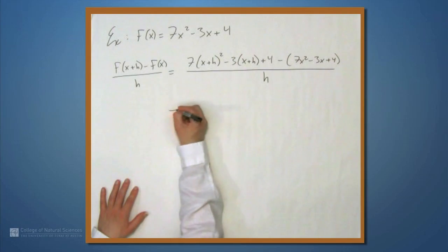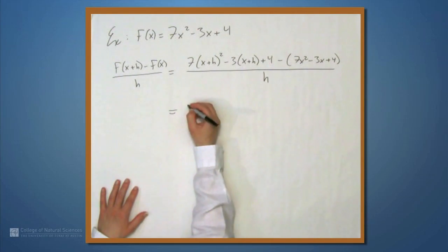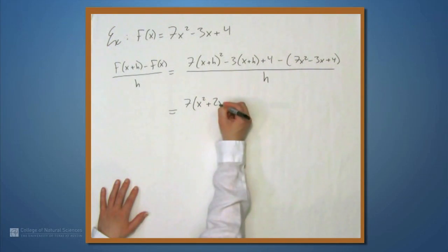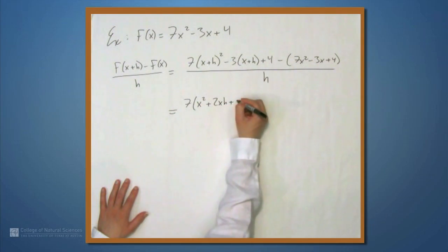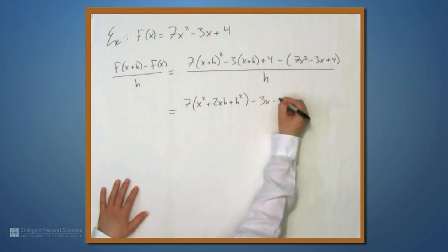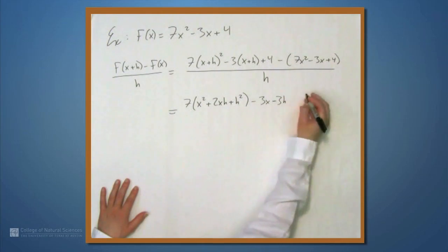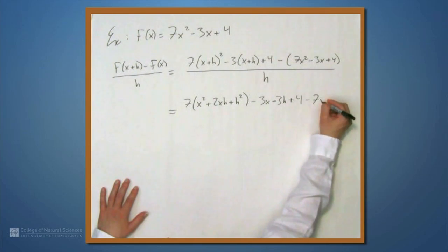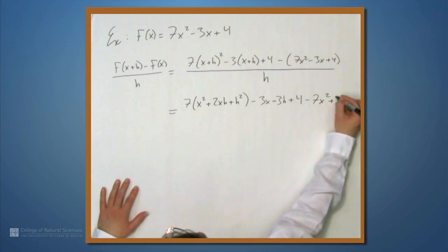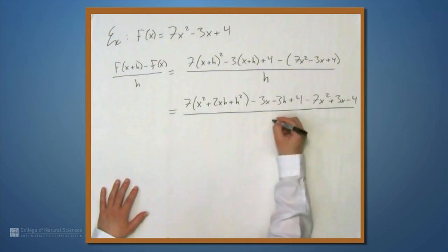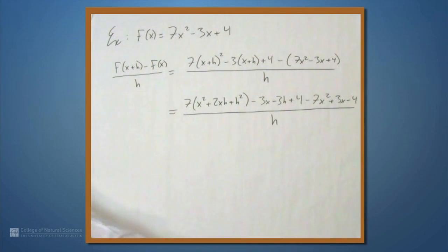We're going to have to simplify this. Let's expand some of these. This part becomes 7 times the quantity x squared plus 2xh plus h squared. This becomes minus 3x minus 3h and then plus 4. And we'll distribute this minus, so we get minus 7x squared plus 3x minus 4. And this whole thing once again, all over h.